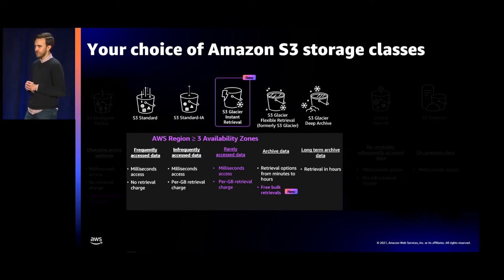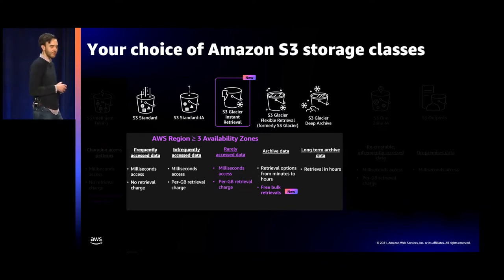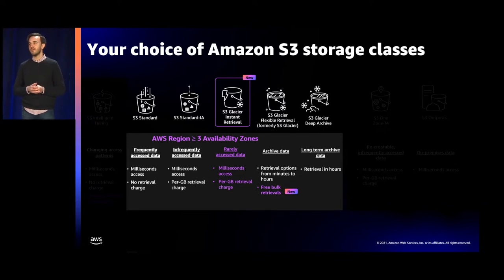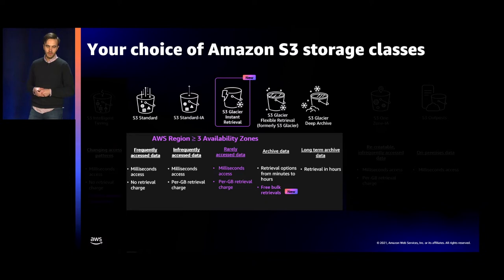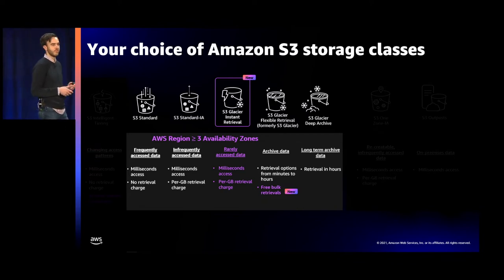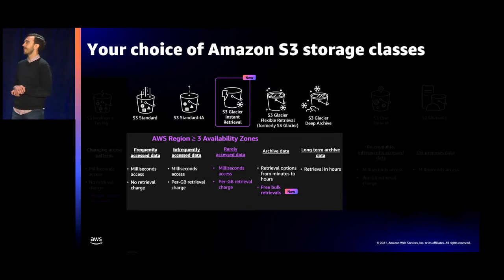S3 Standard is the ideal storage class for frequently accessed data — the best choice if you're accessing data more than once a month, and also ideal for small, short-lived objects. S3 Standard Infrequent Access and the storage classes that follow are designed for less frequently accessed workloads, where the cost of stored data decreases but the cost to access data moderately increases. S3 Standard Infrequent Access is ideal for data accessed about once every month or two. S3 Glacier Instant Retrieval is ideal for data accessed once a quarter. S3 Glacier Flexible Retrieval delivers additional cost savings with retrieval times of minutes to hours, and bulk retrievals are now free. S3 Glacier Deep Archive delivers the lowest cost storage with retrieval within hours.